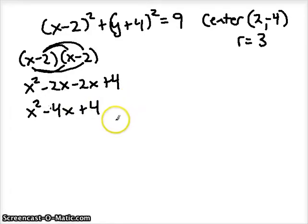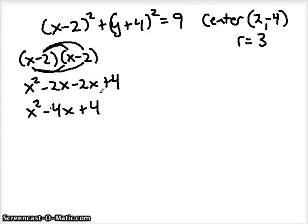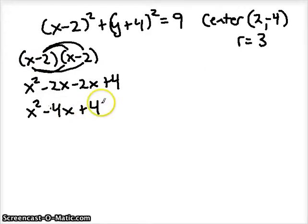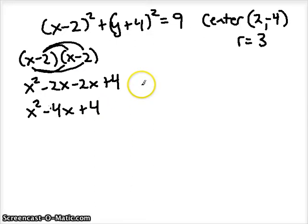A useful shortcut: from X minus 2 squared, you can jump straight to the expanded form by doubling the number attached to the variable. So negative 2 doubled gives negative 4X. The constant term is always that number squared, so negative 2 squared gives positive 4. Getting comfortable with this trick will help you solve these problems faster.